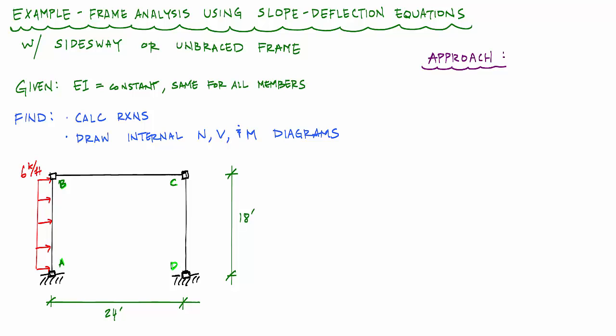The frame that I have in this problem is fixed at A, has a moment connection at B, another moment connection at C, and then fixed at D. And here I have a length of 24 feet and a height of 18 feet and a uniformly distributed load on member AB that is six kip per foot.